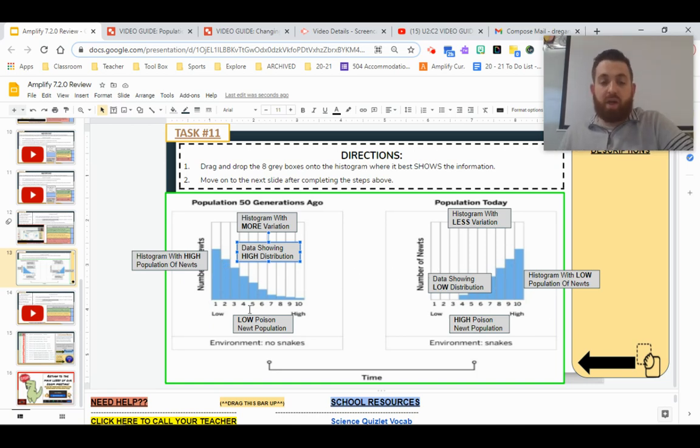And last but not least, we know that this section has more low poison newt population because our low variations, one through five, are higher versus over here where the high population six through 10 is higher.